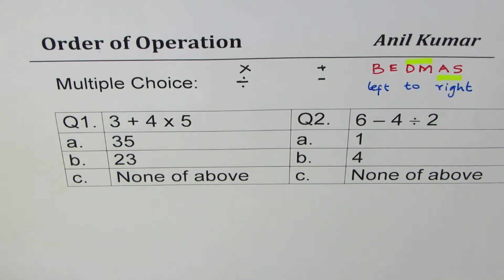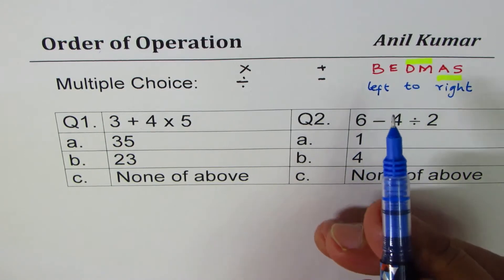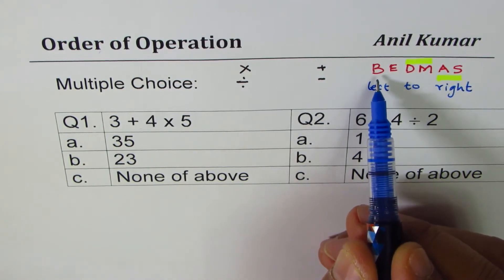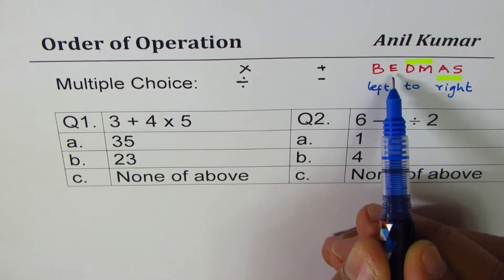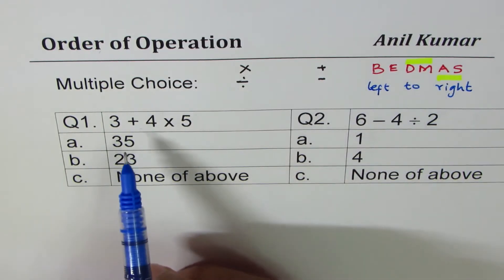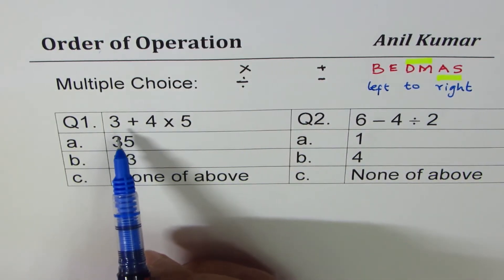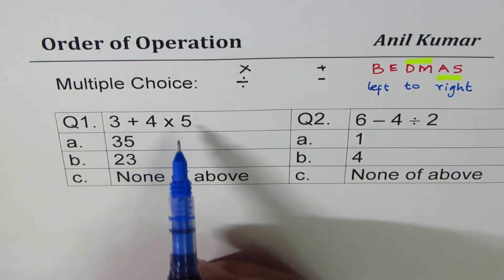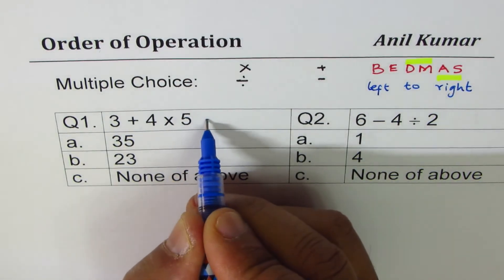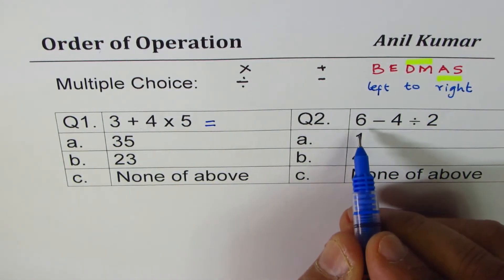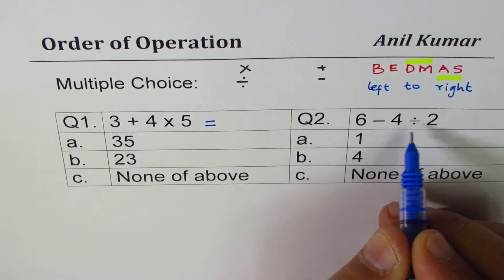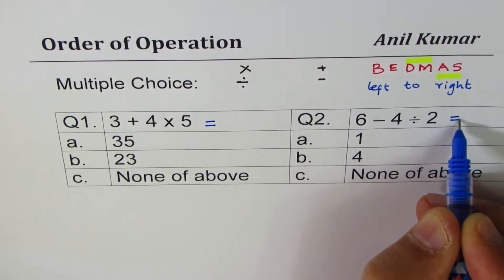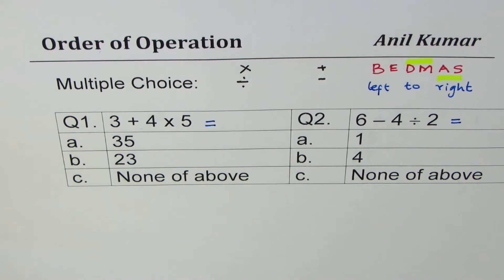I have taken very simple examples to start with. In our examples in this particular video we are not taking brackets, nor are we taking exponents. Simple question here is: 3 + 4 × 5 equals what? The second one is: 6 - 4 ÷ 2 equals what? You can pause the video, answer this question, and then look into my solution.